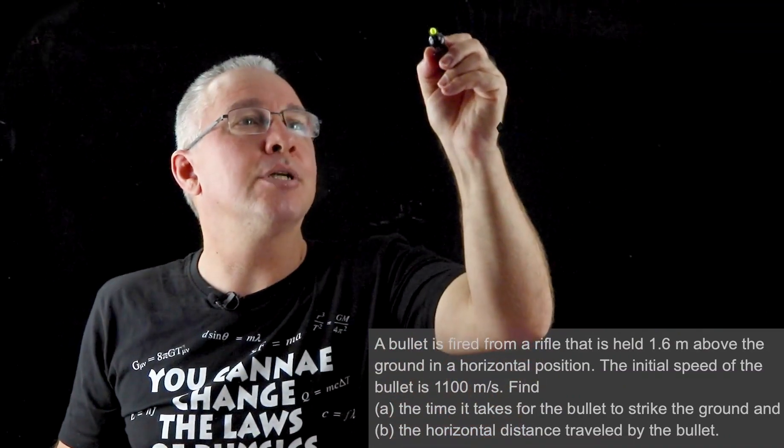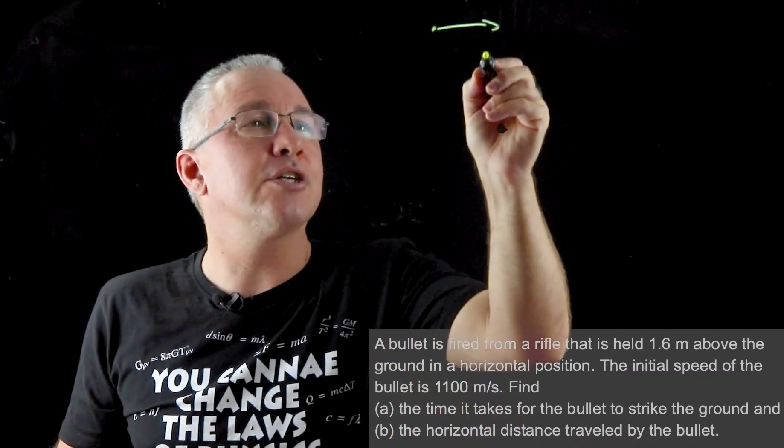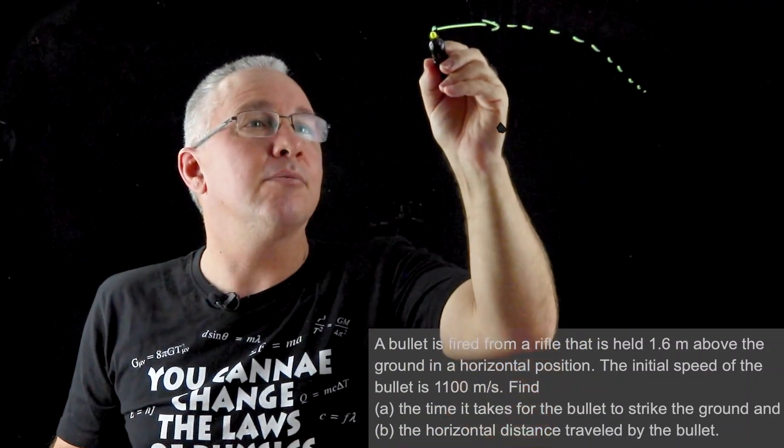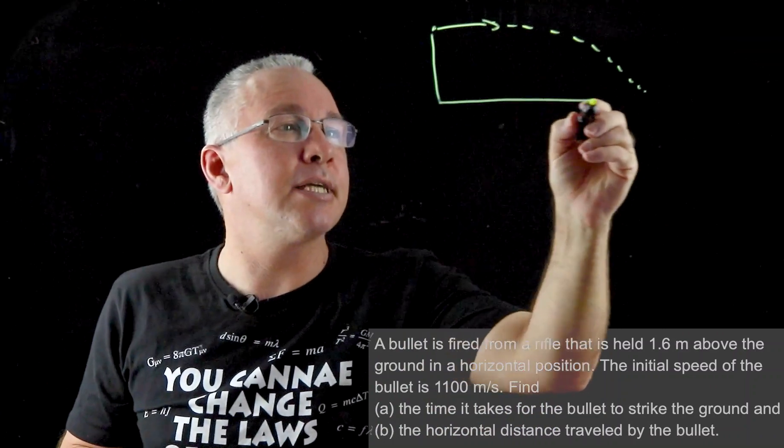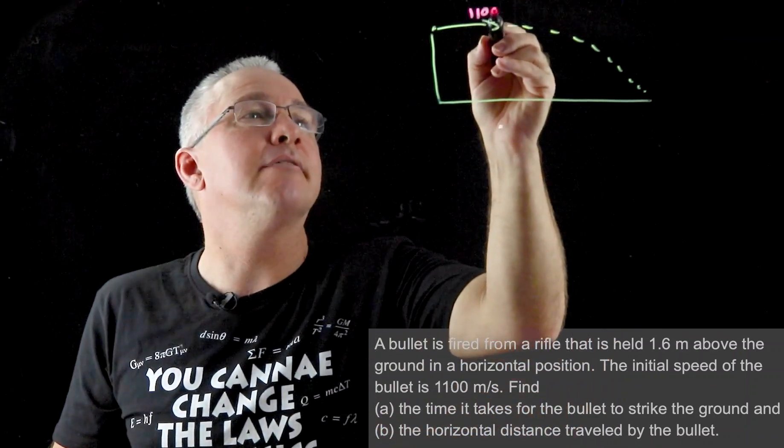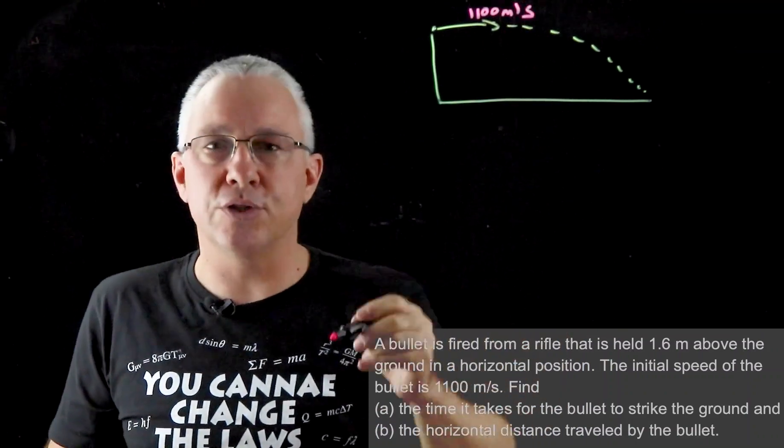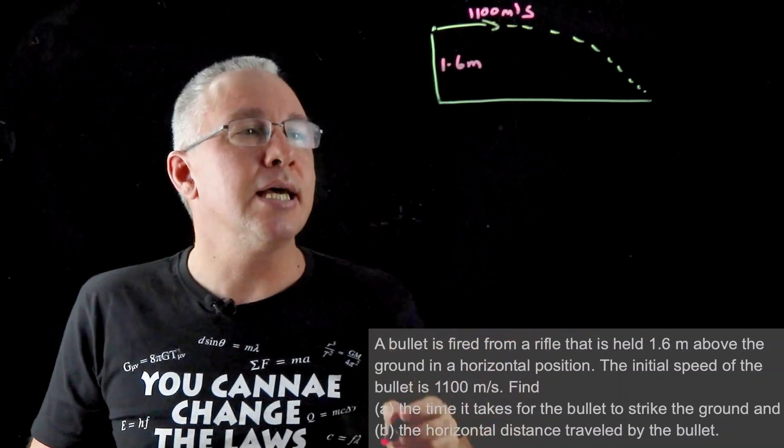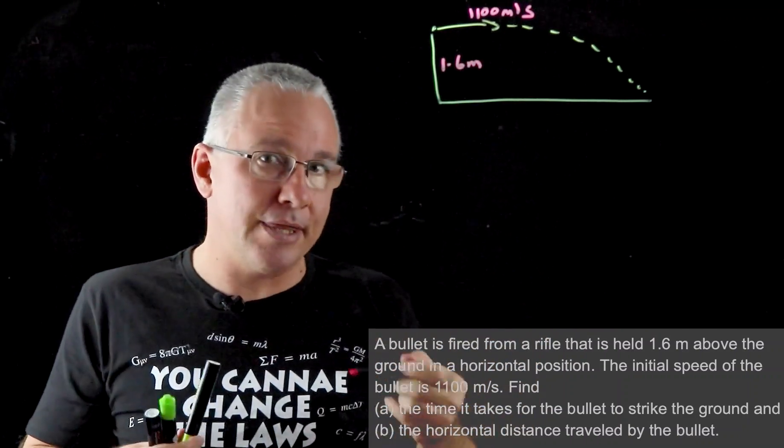So here we have our bullet here and it's going to be fired in this direction and it's going to undergo projectile motion like so, and we can now label various aspects on there. The first thing we're going to label is our velocity which is 1100 meters per second. We also know it's going to drop vertically 1.6 meters.